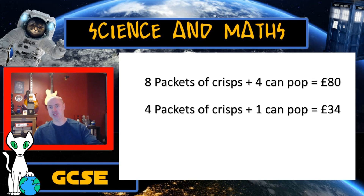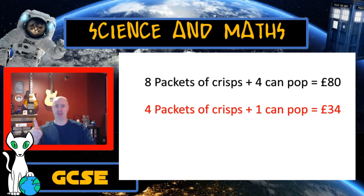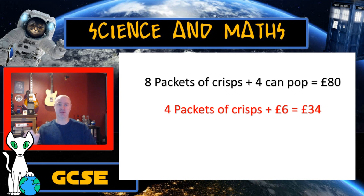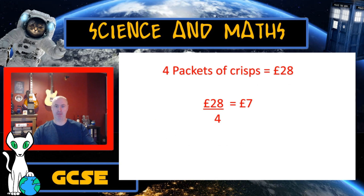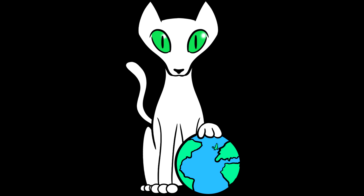How can I use that to figure out what a packet of crisps costs? I'm going to take that £6 and substitute it into one of these equations — four packets of crisps plus one can of pop equals £34. I can change that now to: four packets of crisps plus £6 equals £34. So £34 minus £6 tells me that four packets of crisps equals £28. And straight away, £28 divided by four means a packet of crisps must equal £7. The answer's always seven. I win. Bye-bye.